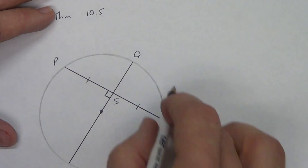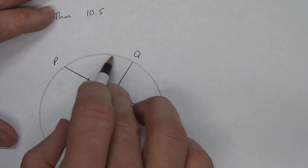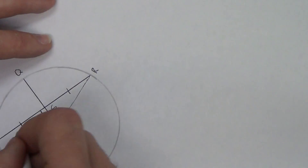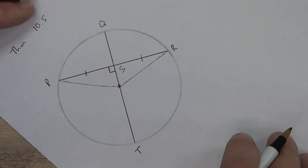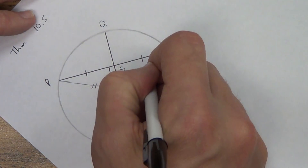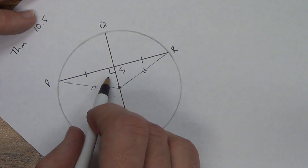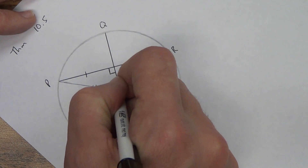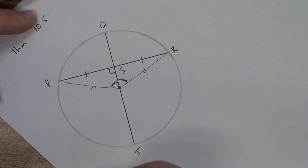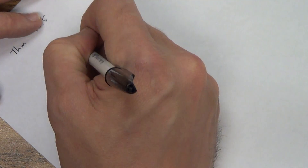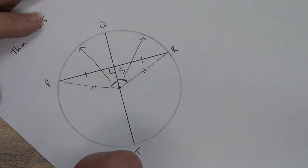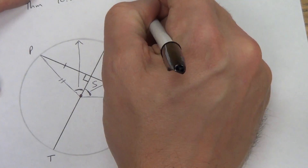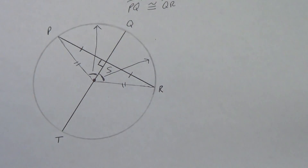A diameter perpendicular to a chord also bisects the arc — arc PR. So we need to show that arc PQ is congruent to arc QR. We draw a radius again. Those radii are congruent since the radius never changes. We've got right angles, so we have HL again. By HL, these triangles are congruent. By CPCTC, these central angles are congruent. Central angles lead to arcs, so if the central angles are congruent, then the arcs are congruent. Therefore arc PQ is congruent to arc QR.